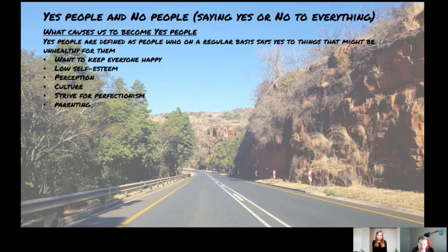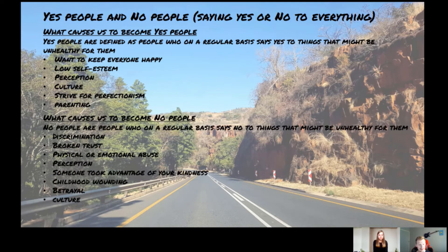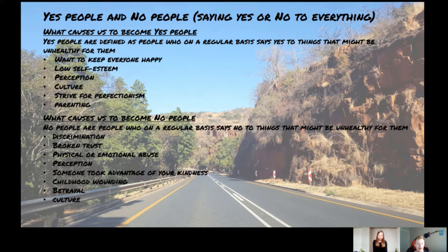Now we're going to move on to what causes you to be an avoidant person or a no person. These are people who say no on a regular basis to things that might actually be good for them. An example might be people who isolate themselves from the outside world instead of spending some time with loved ones or friends. A lot of us have experienced this with the COVID situation — being isolated in one place for a very long time has a very negative effect on a person's mental state.